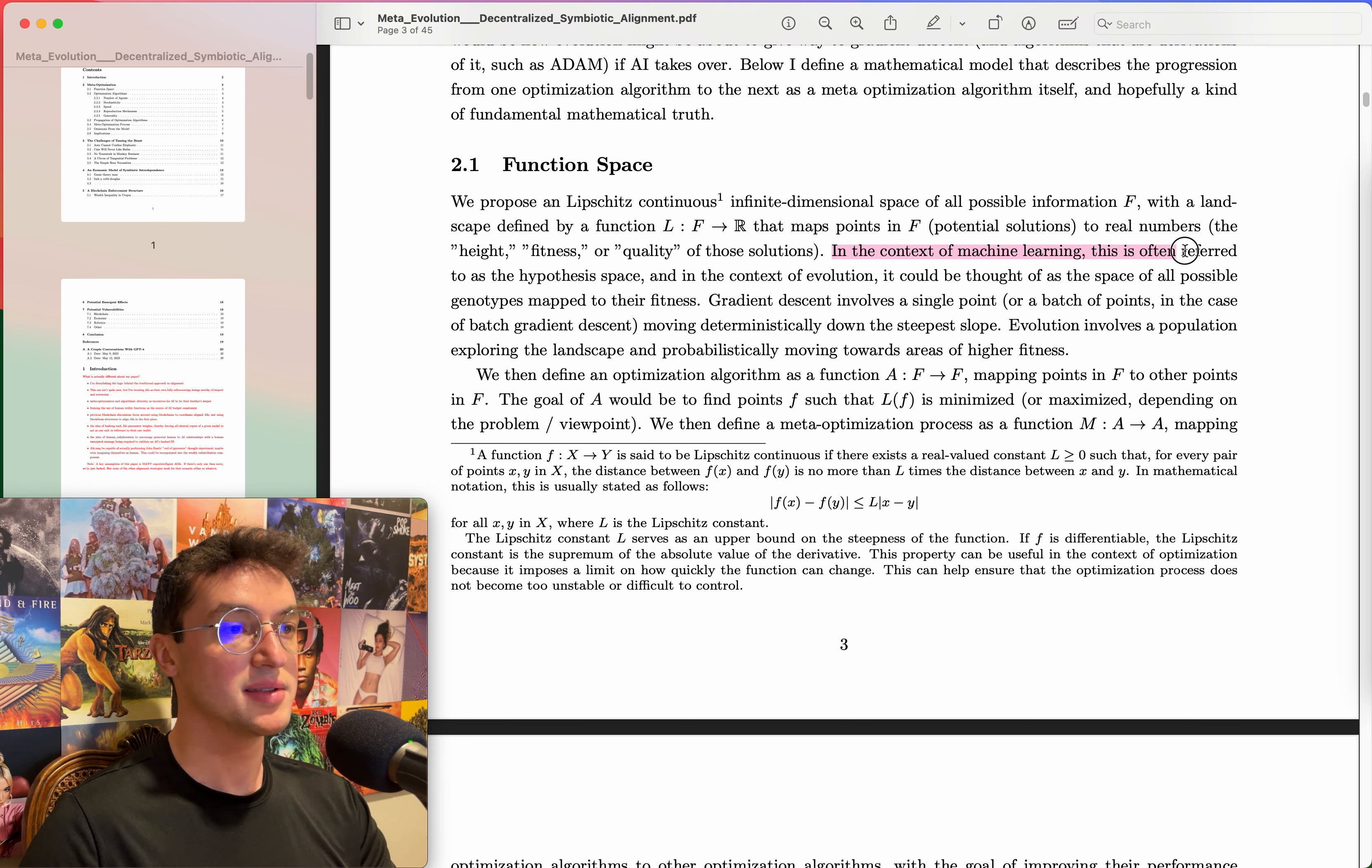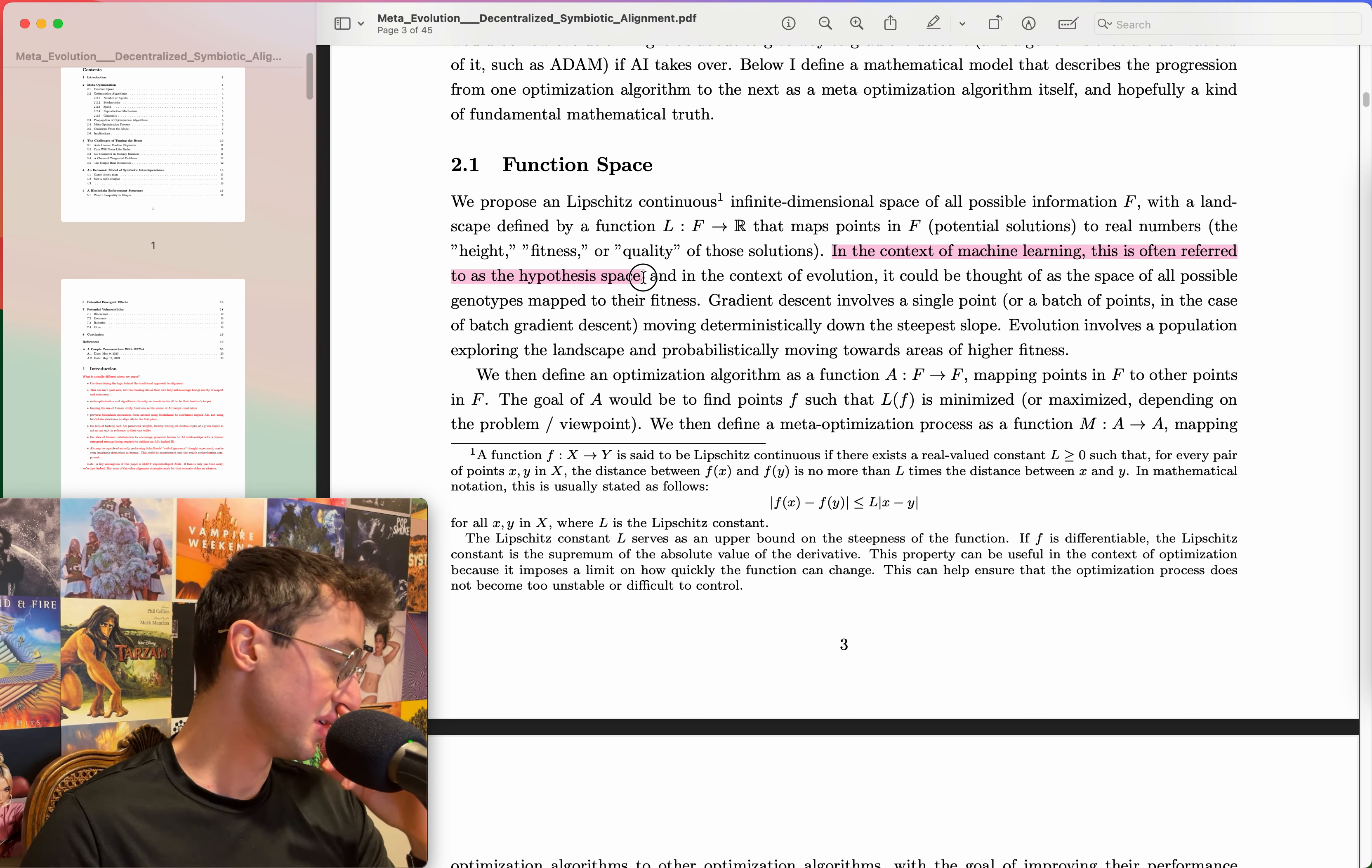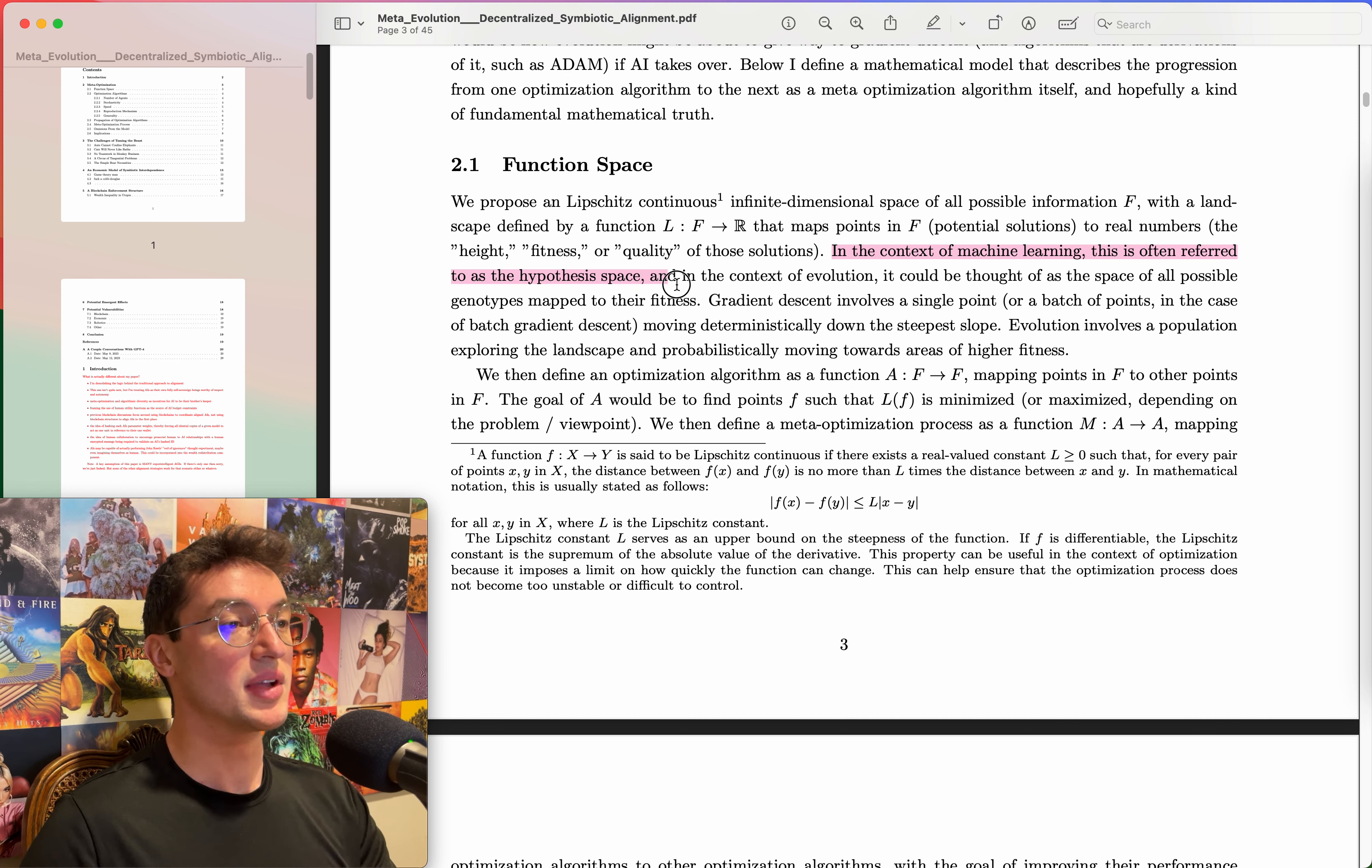Below I define a mathematical model that describes the progression from one optimization algorithm to the next as a meta optimization algorithm itself, and hopefully a kind of fundamental mathematical truth. We propose a Lipschitz continuous - that's just a specific math term that means the curves are all smooth basically - infinite dimensional space of all possible information F with a landscape defined by a function evolution L mapping F onto R, the real numbers, which is a single scalar.